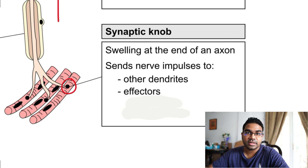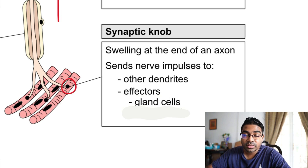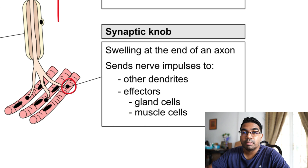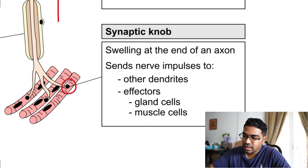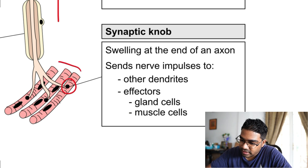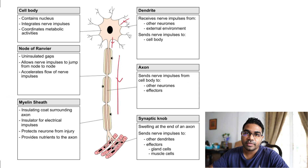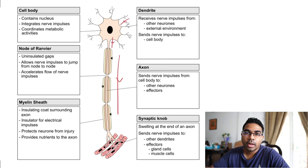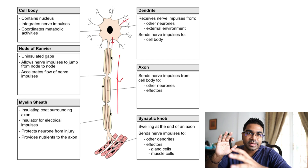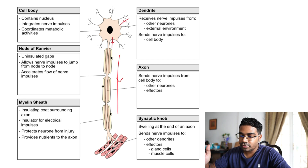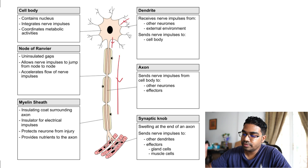The effectors carry out the response — such as gland cells through the endocrine system or muscle cells, like skeletal muscle cells connected directly to the synaptic knob. This is the general structure and function of a typical neuron; however, they differ slightly from neuron to neuron. Let's look at the different types of neurons.